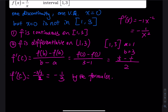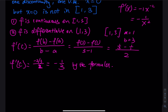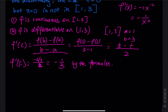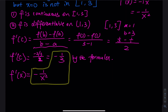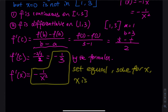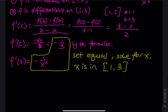Now I need to find c by setting f'(x) equal to −1/3. We have f'(x) = −1/x², so I set −1/x² = −1/3 and solve for x. The value x must lie between 1 and 3.